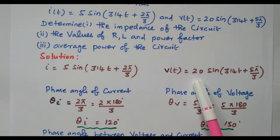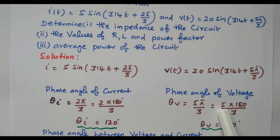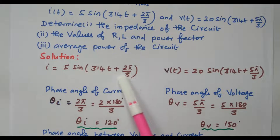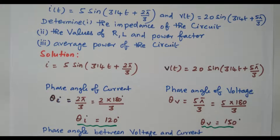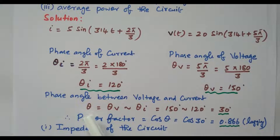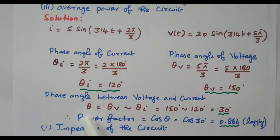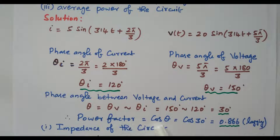Similarly, the voltage v(t) = 20 sin(314t + 5π/3). So we extract the phase angle of voltage from this equation. The phase angle between current and voltage is 30 degrees. From this, we can find the power factor because power factor is cos(θ), where θ is the angle between current and voltage.